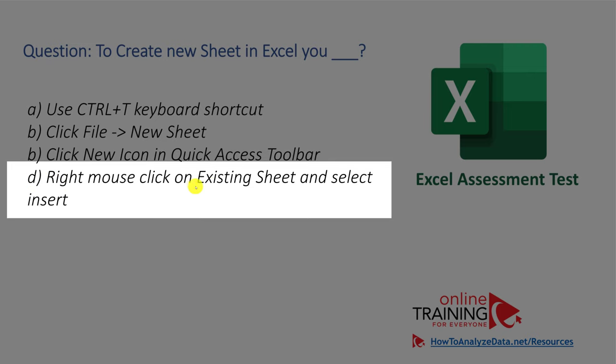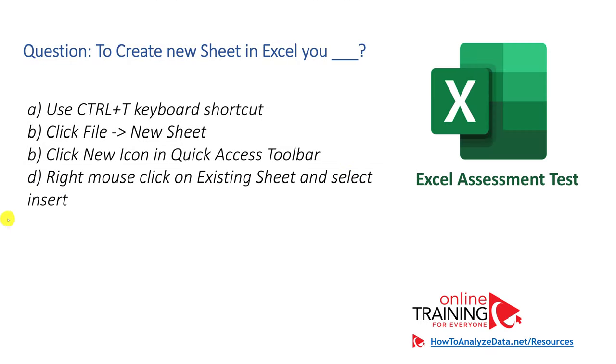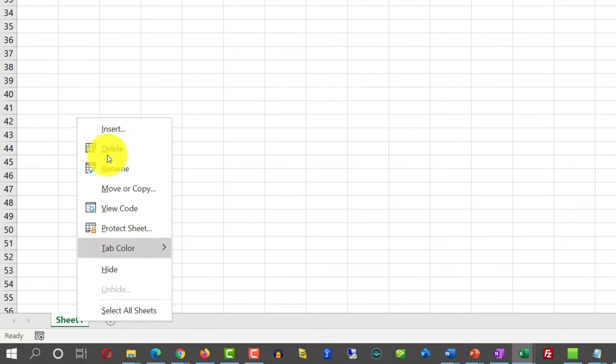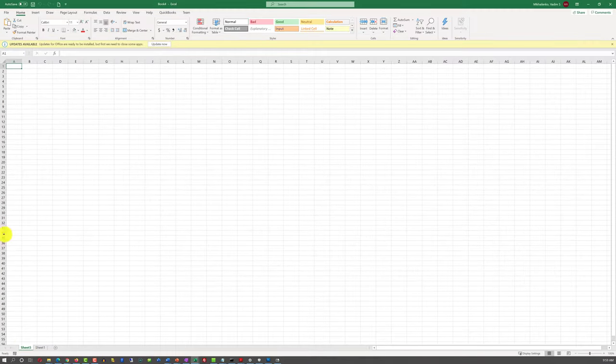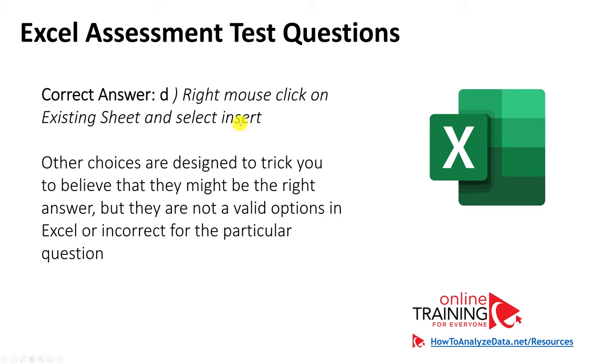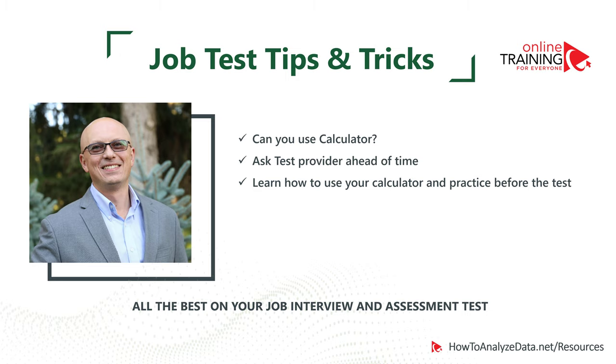To create a new sheet in Excel, you right-click on Sheet 1, click Insert, and select Worksheet. That adds a new worksheet to the spreadsheet. The correct choice is D. Other choices are designed to trick you — they are not valid options in Excel or are incorrect for this question. One thing you can ask the test provider is whether you can use a calculator during the test.